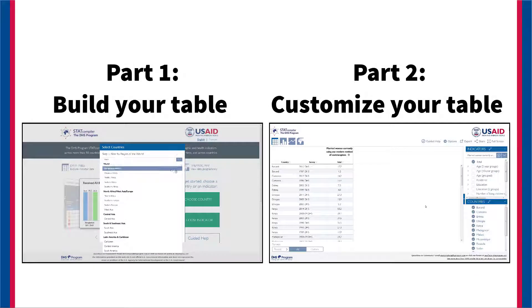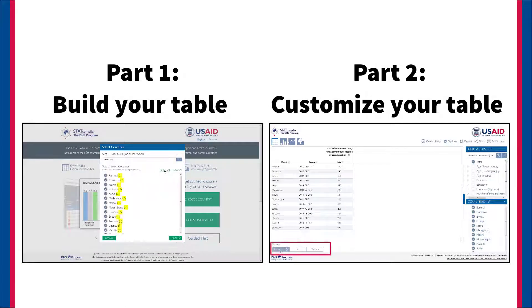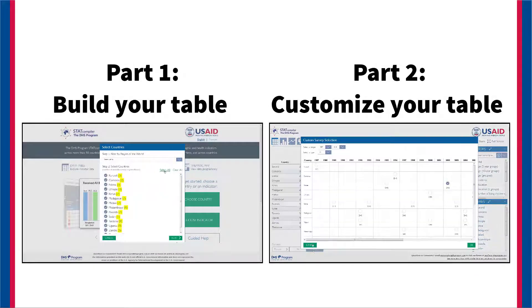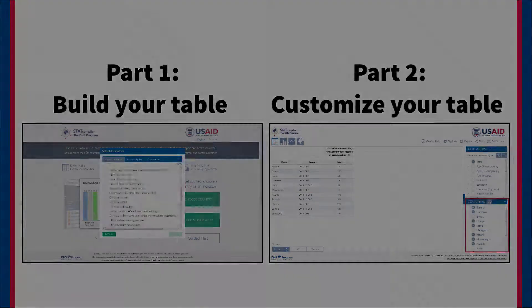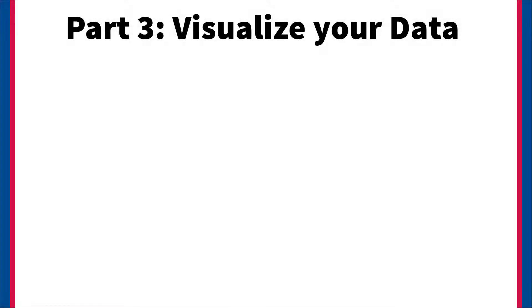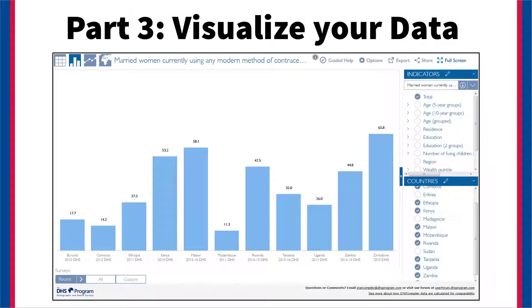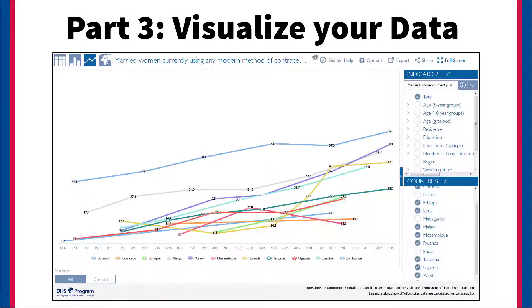In Parts 1 and 2 of the Stack Compiler tutorial video series, we learned how to create a custom table. In Part 3, we are going to visualize these data in a column chart, a line graph, and a map.